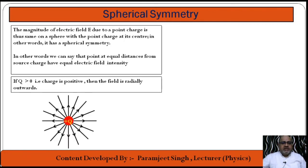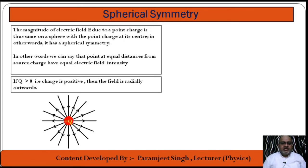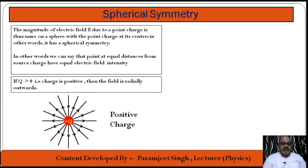If the source charge is positive, the field is radially outward. This is spherical symmetry of the electric field due to a point charge. The electric field lines point outward in all radial directions from the positive source charge.